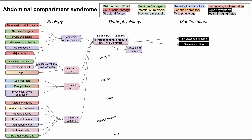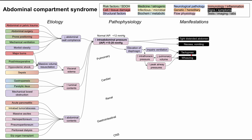The pulmonary system is significantly affected. Increased intra-abdominal pressure elevates the diaphragm — the muscle separating the chest and abdominal cavities — impairing ventilation and increasing intrathoracic pressure. This elevated intrathoracic pressure decreases pulmonary volume, as the lungs don't have enough space to expand, and also increases peak airway pressures. The result is tachypnea and wheezing, manifesting as shortness of breath.